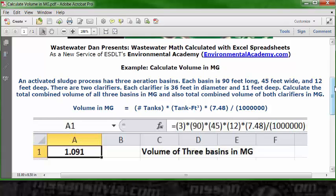And you will have 1.091 in cell A1, which is the answer. That is, with these tank dimensions of all three basins, the total volume in MG is 1.091.